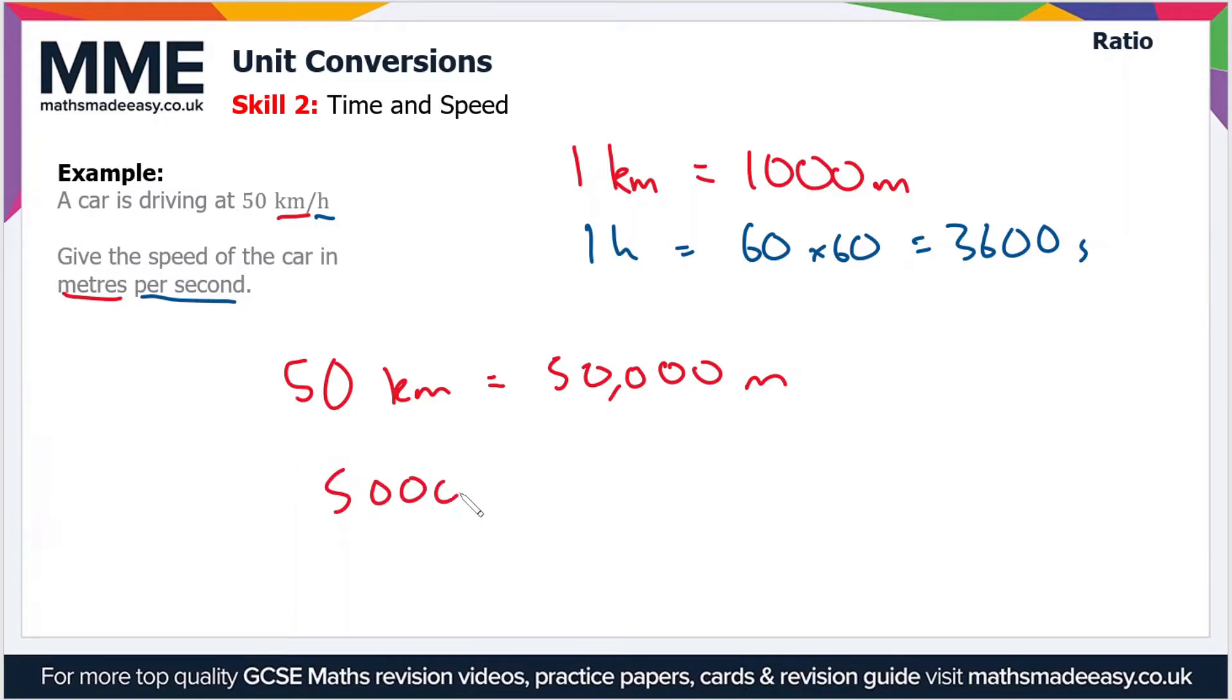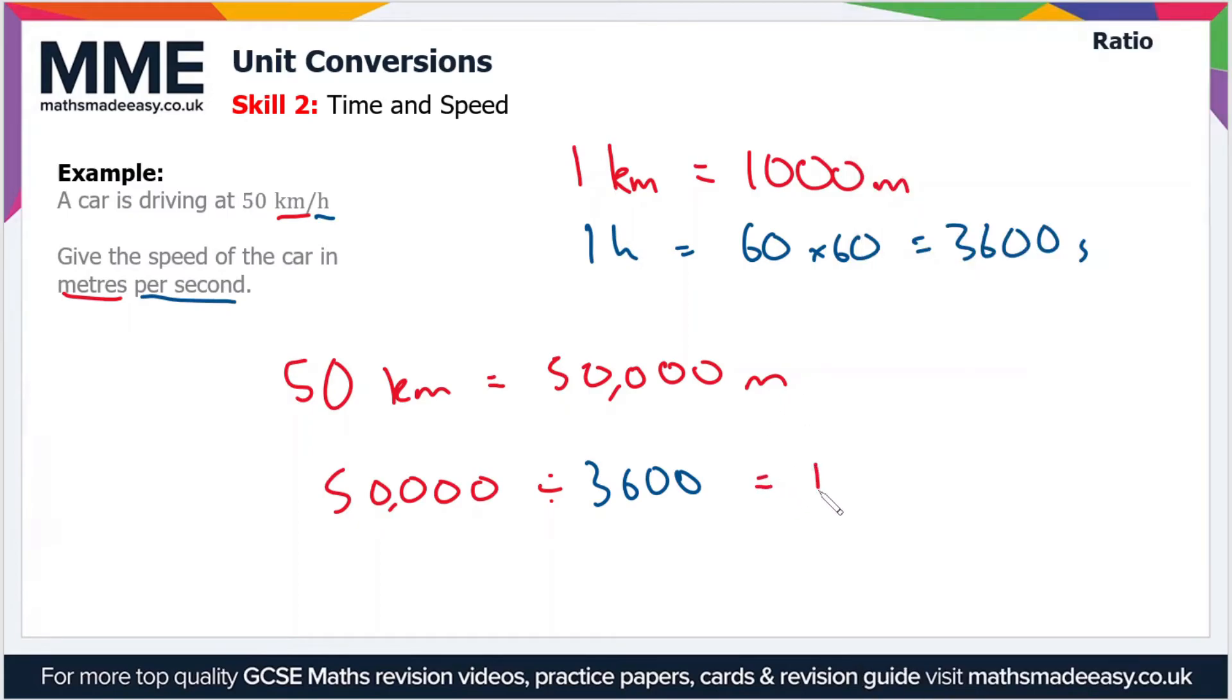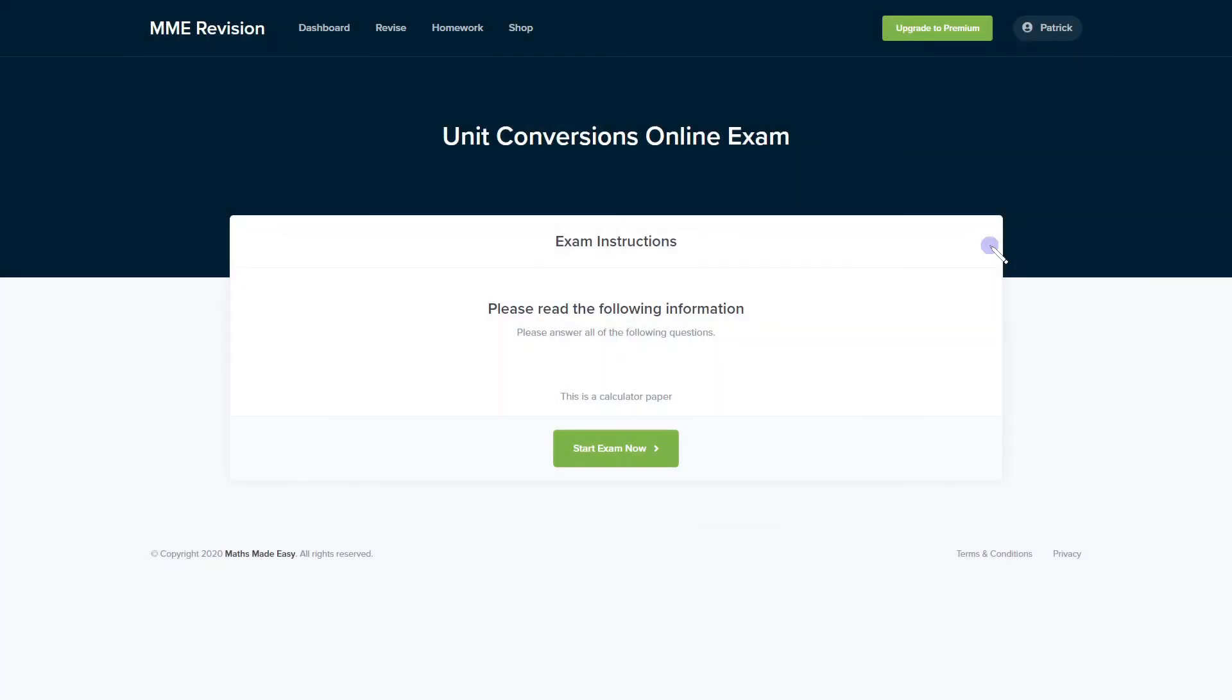We can do this on a calculator, so 50,000 divided by 3600, and that gives us 13.8 recurring, so 13.9 to three significant figures or one decimal place. So that is meters per second.